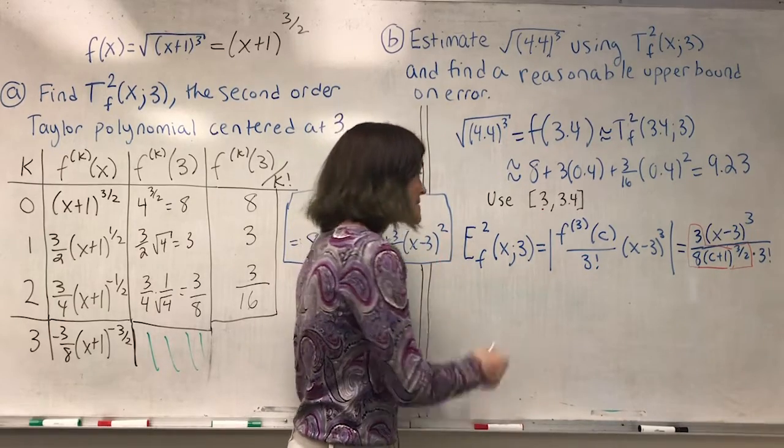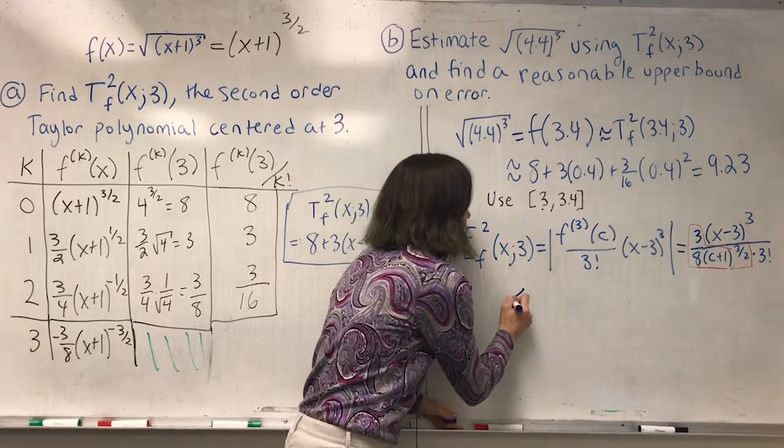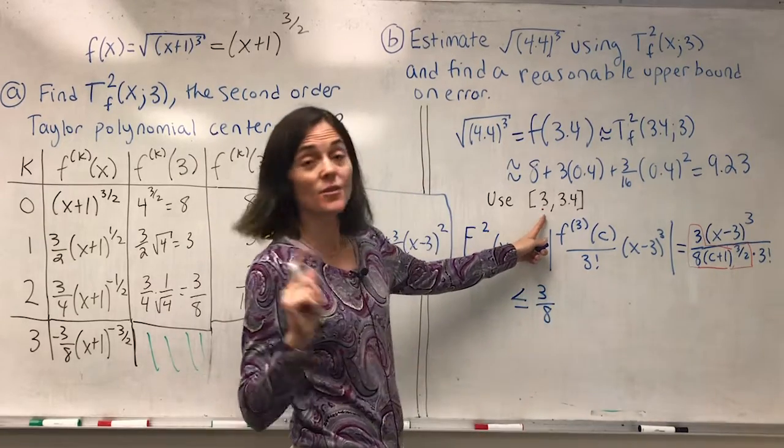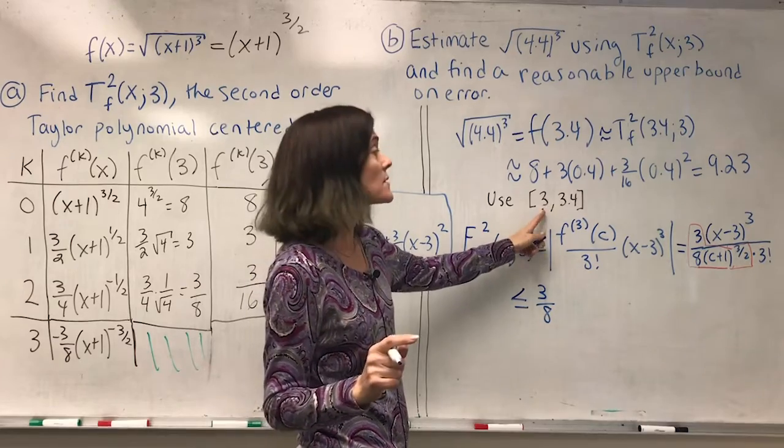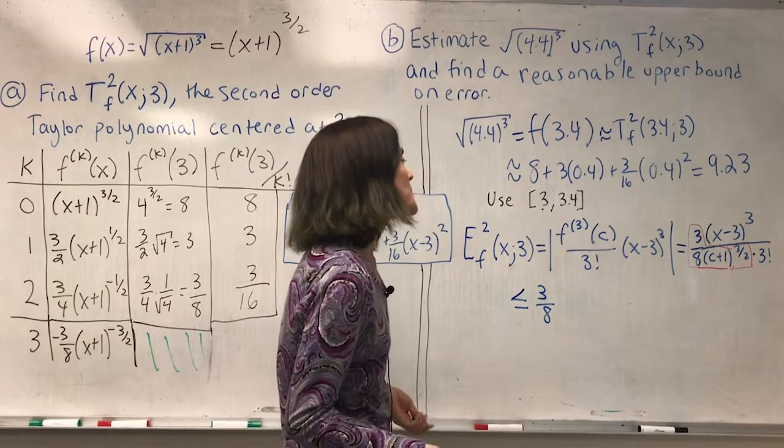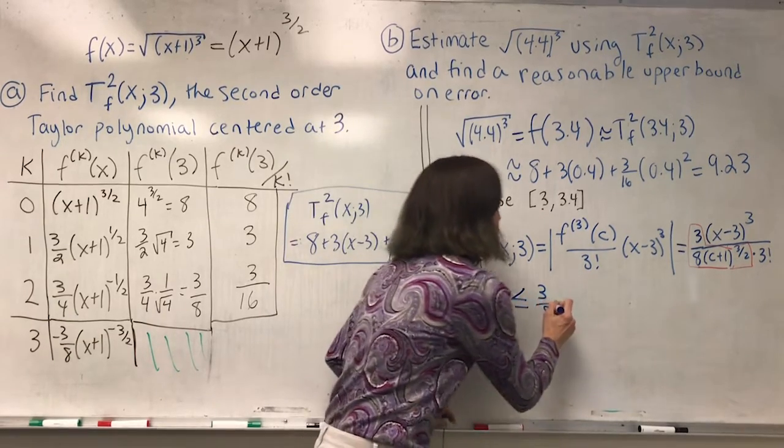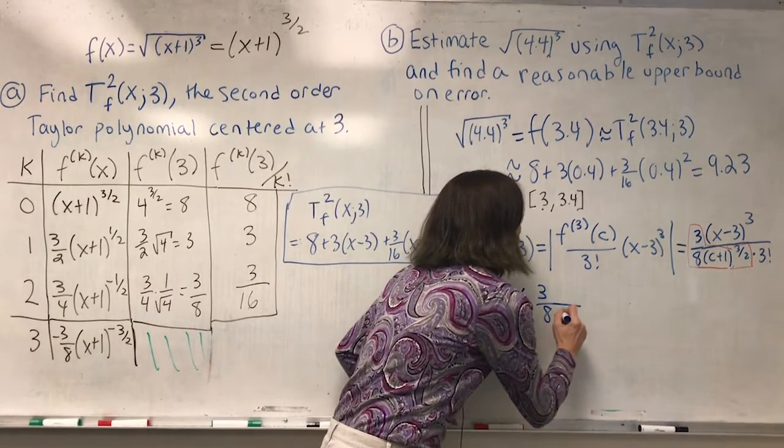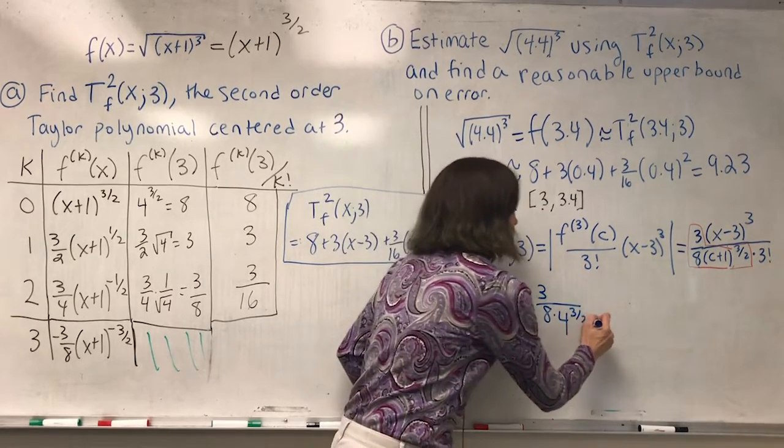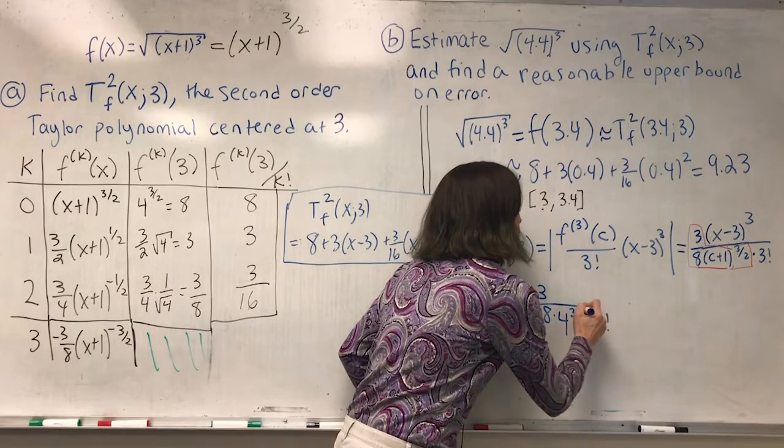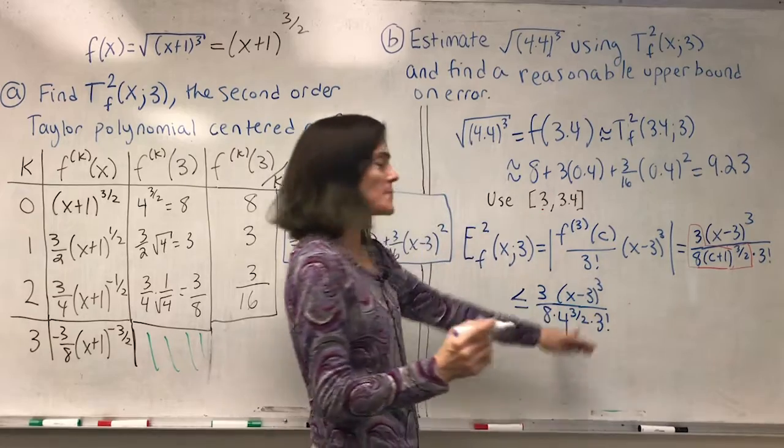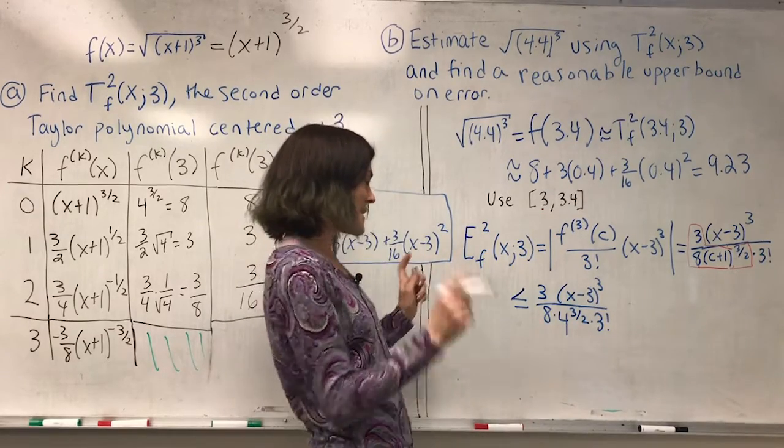Therefore, the largest it can be is on this end point. Okay, so we may say that this is less than or equal to 3 over 8. And now I put in 3 for c. It's the largest it can be, if you're between 3 and 3.4, which would be 4 to the 3 halves. And I will clean up some of the coefficients in my next step.